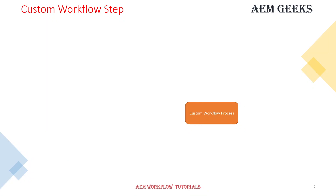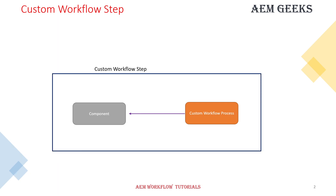To write a custom workflow step, you need a component. This is a normal component but it will not have any rendering script or backend module — no Sling model or use class. It will only have a dialog and an edit config node. When you link a custom workflow process to this component, the whole setup becomes a custom workflow step. This step will then be available inside the available steps on the workflow model page.